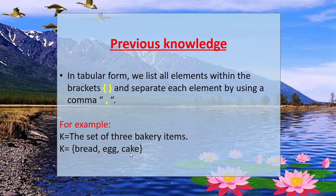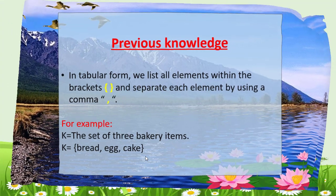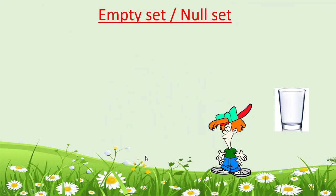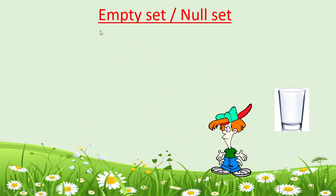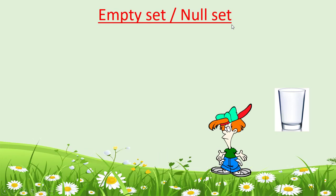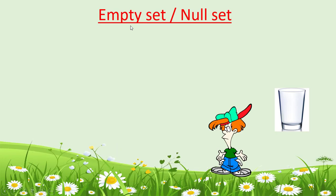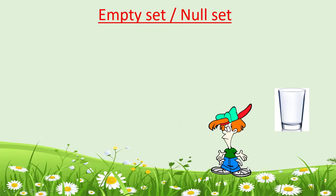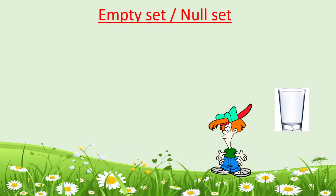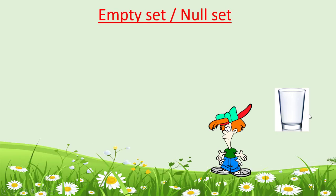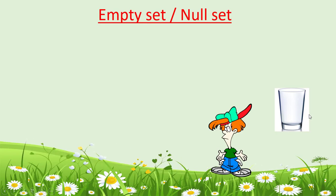Now we learn some important definitions. The first one is empty set or null set. The meaning of the word 'empty' is containing nothing. In the same sense, we use it for a set. When there is nothing in your pocket, your pocket is empty. Similarly, if there is no water in a glass, we say the glass is empty.